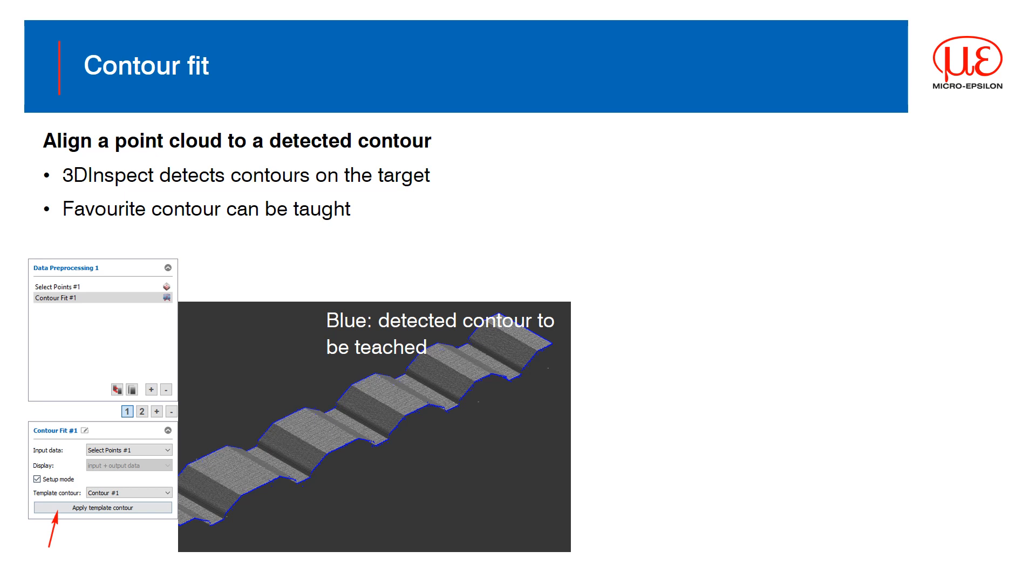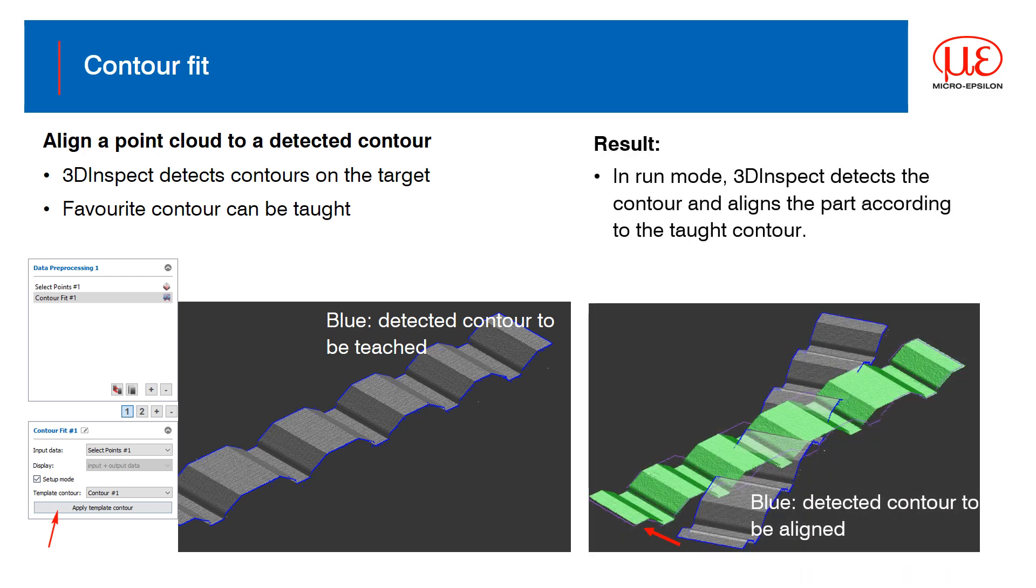Contour fit is a bit like pattern matching so that the shape or contour of the dataset selected is used to reposition the target each time. For example, if targets are presented in slightly different orientations down the line, they can be adjusted and corrected using the contour fit.